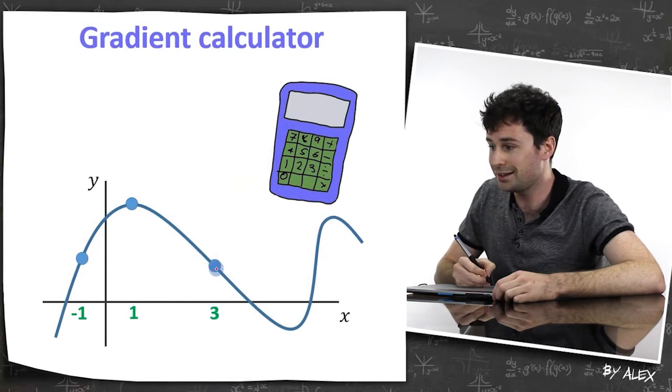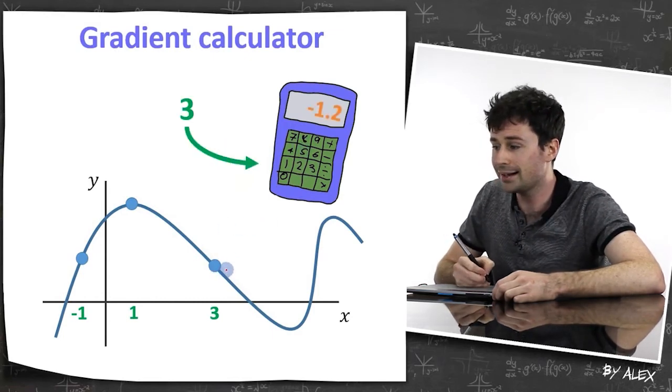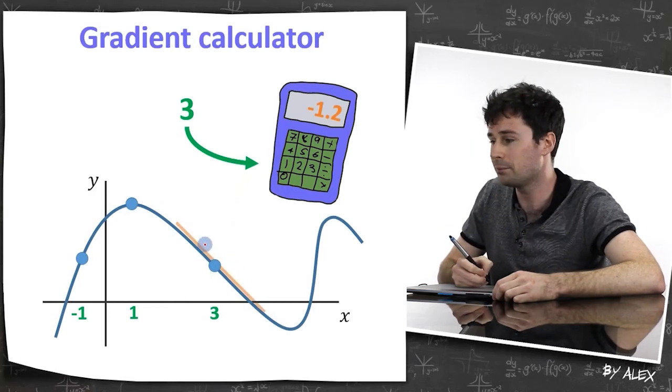And we want to find out what the gradient is at three, so we put in three into our gradient calculator, and it gives us negative 1.2. And that makes sense, okay, cool. That's about negative 1.2 there.